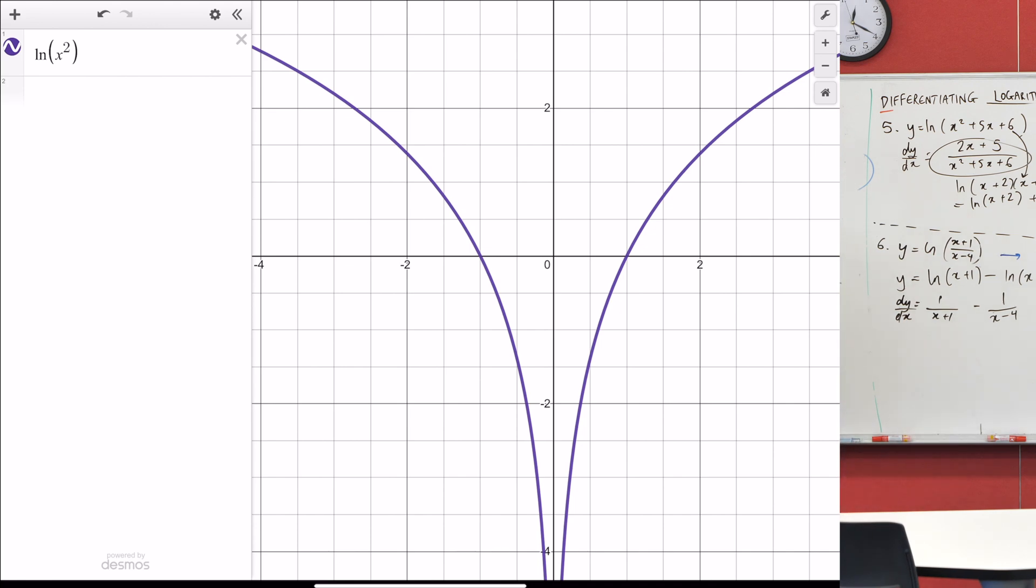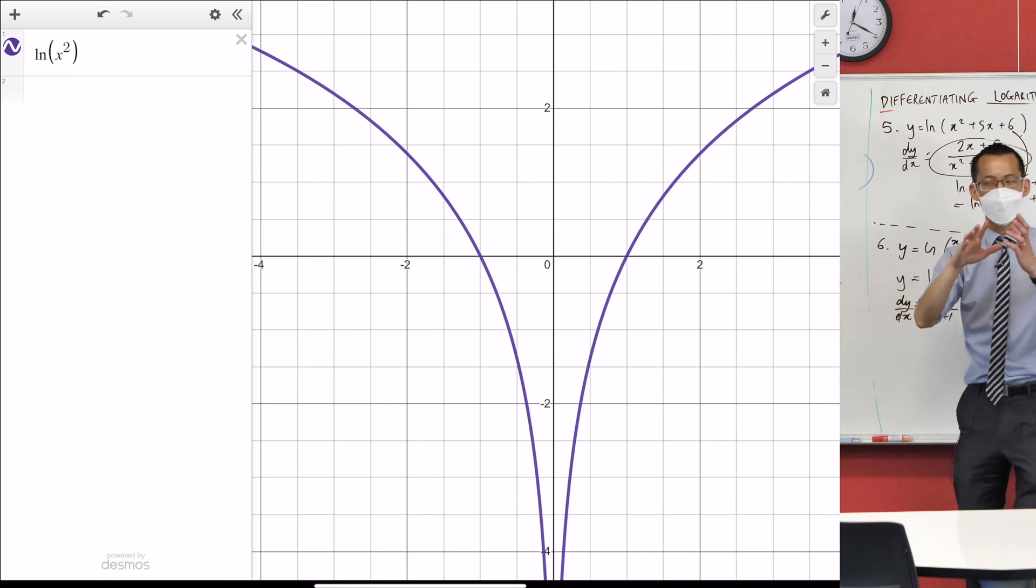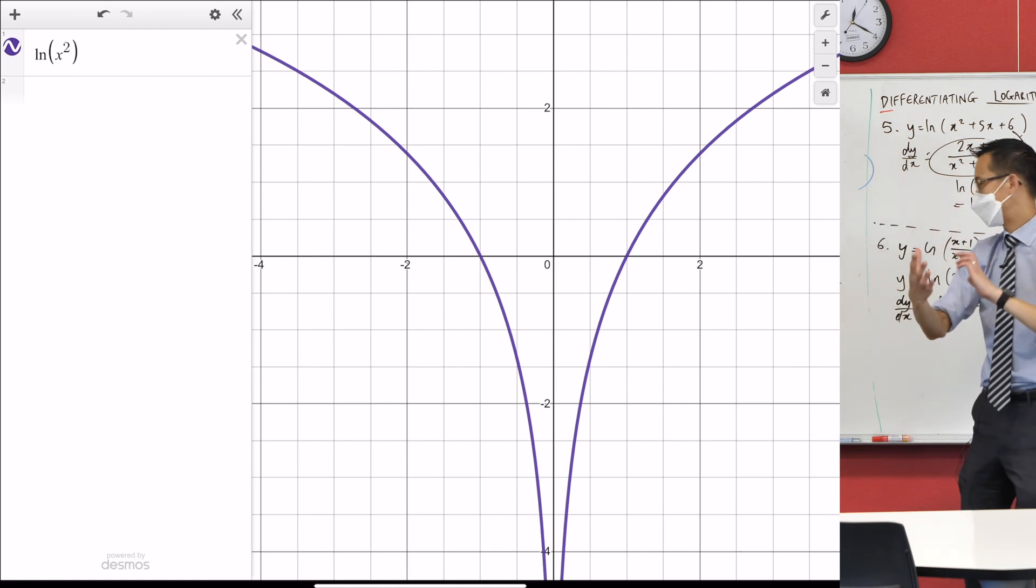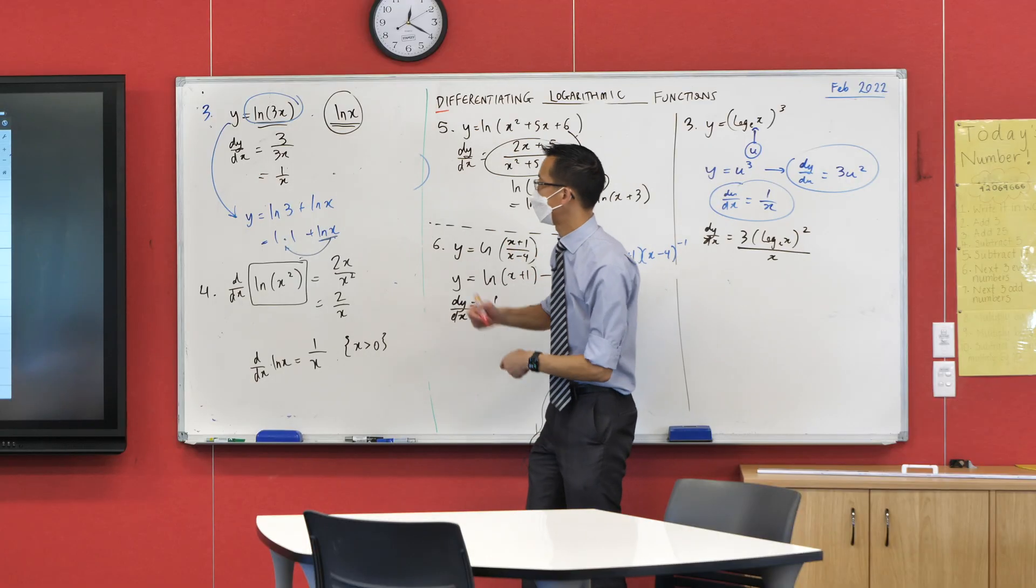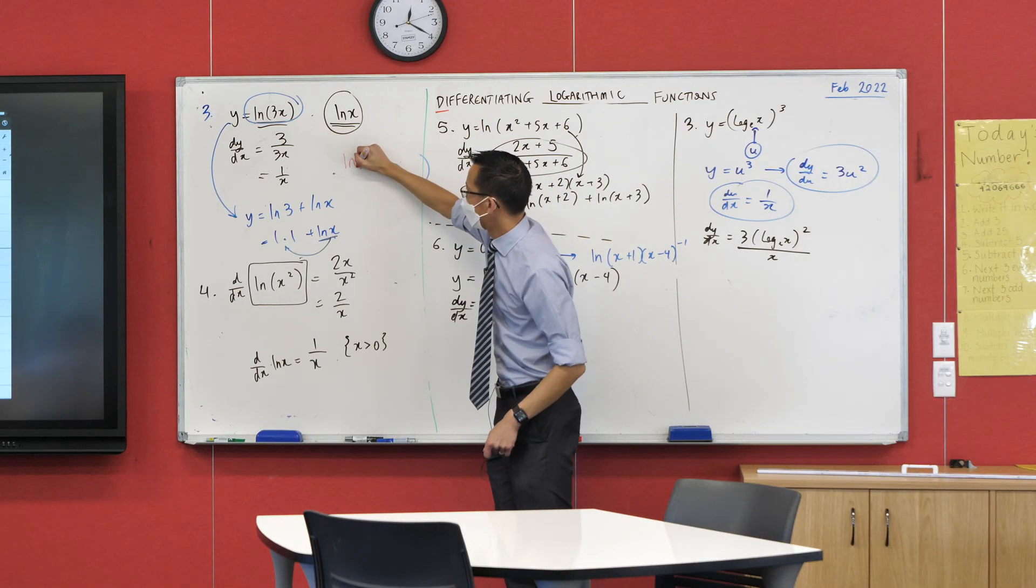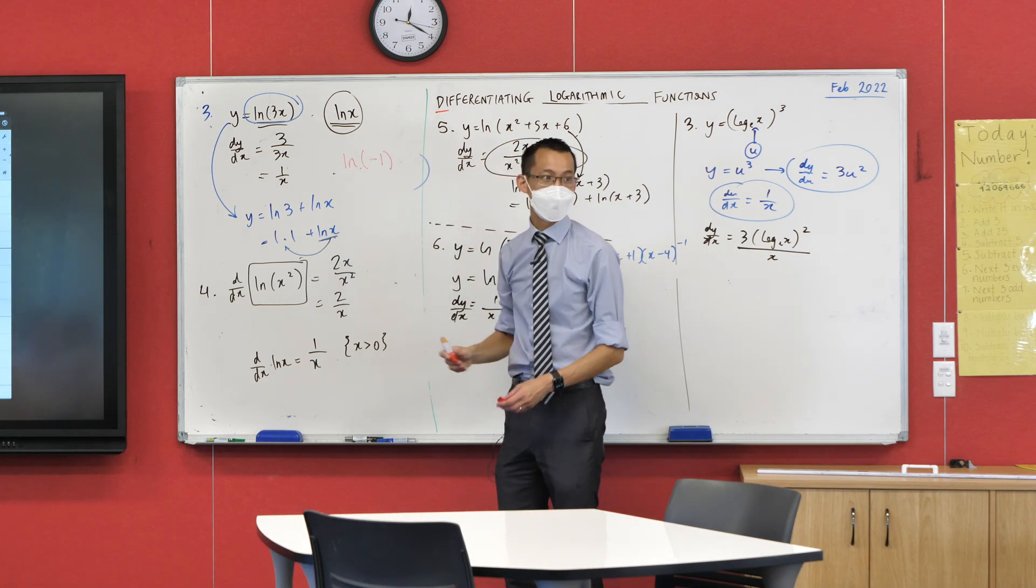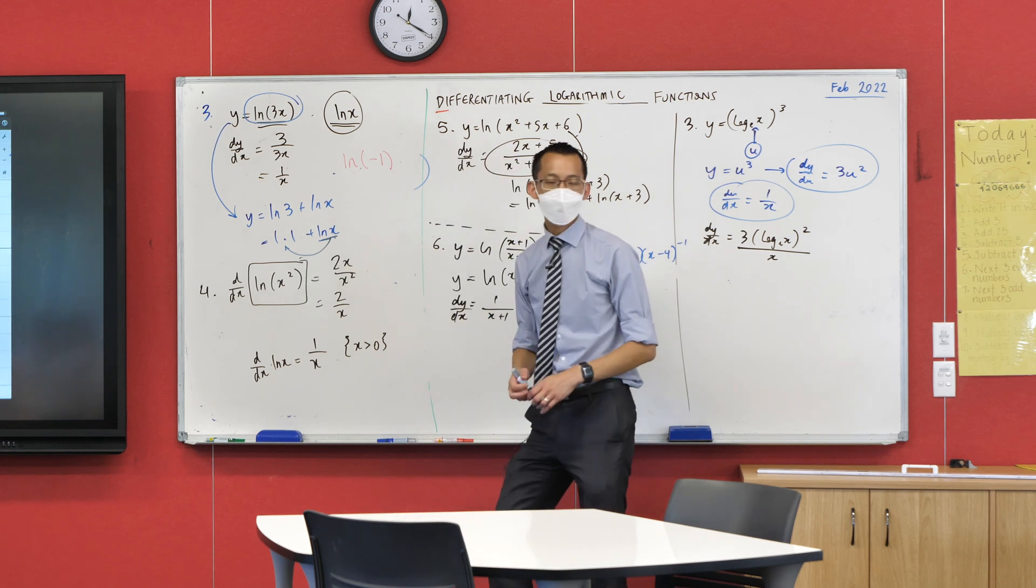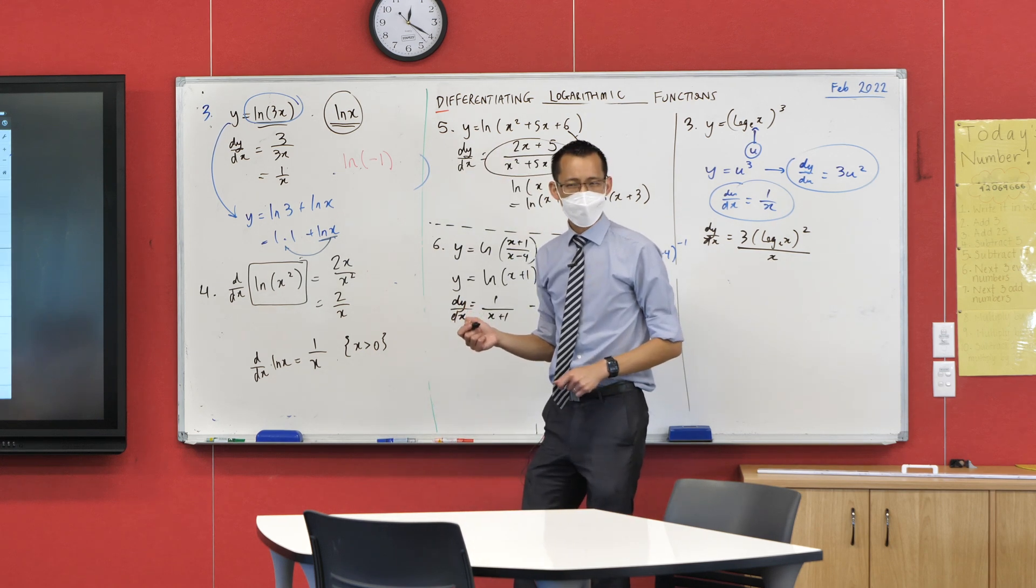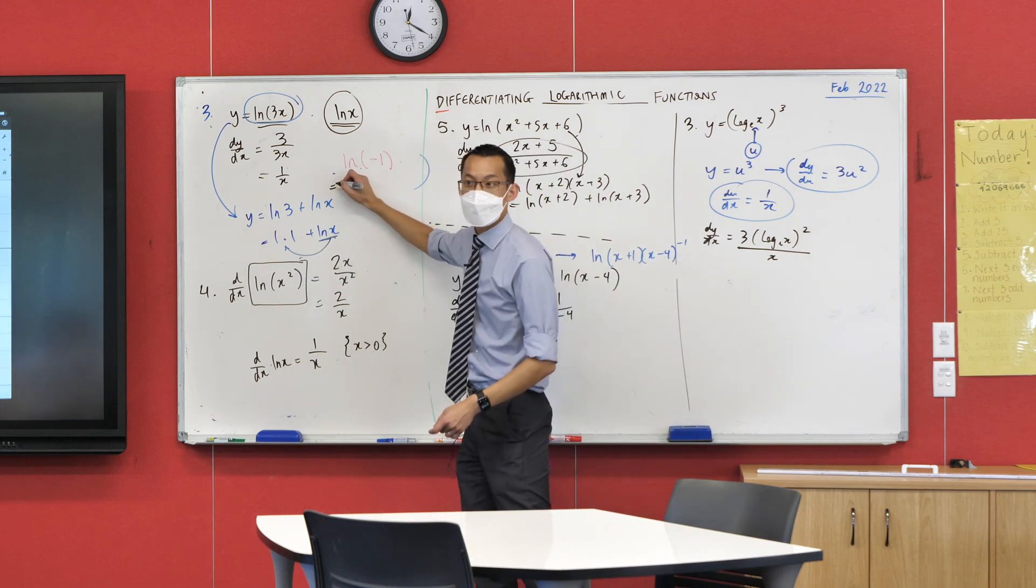Yeah, so when you square, you get this symmetry between left and right. Now if you go to your calculator—can you get it out first, or put it into Desmos if you like—if you put in something like ln of and put a negative number in there, any negative number you like, like negative one for instance, what does your calculator tell you? It's not very happy with you, is it? What does it tell you? It says error.